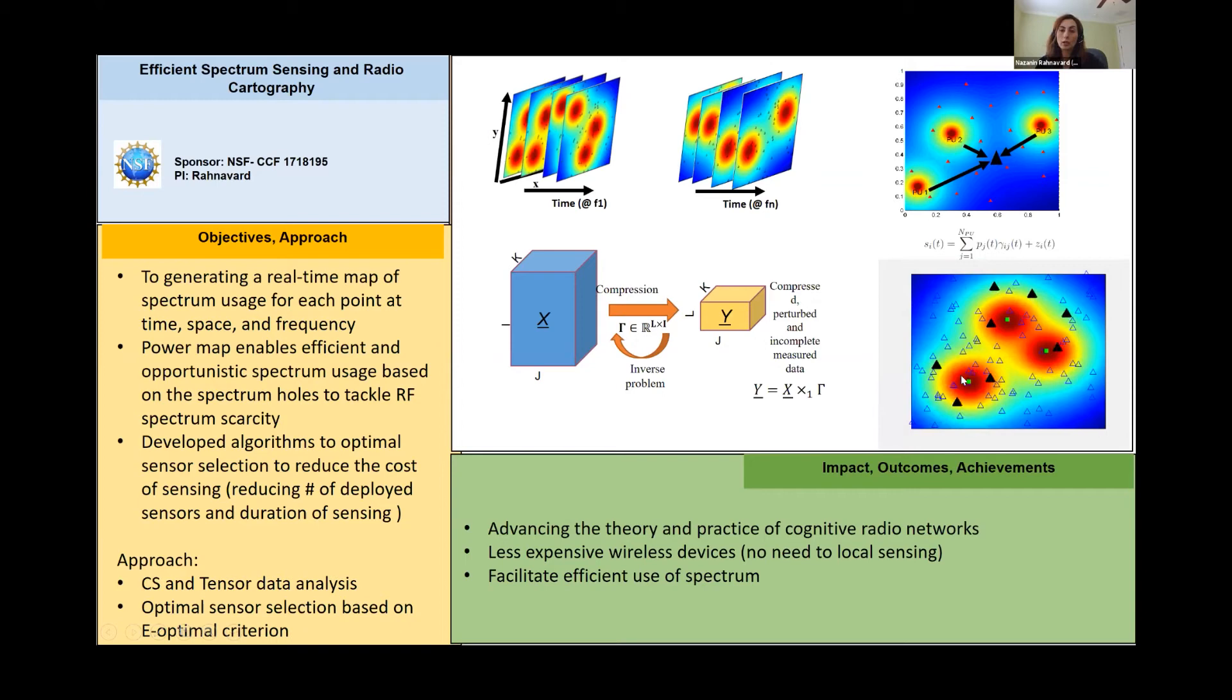We also needed to develop algorithms for optimal sensor selection. Here as we see that the environment is changing, the transmitters are changing, so we have to change to sense the spectrum in different locations at different times.